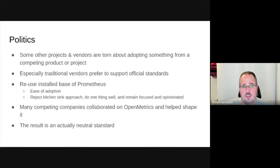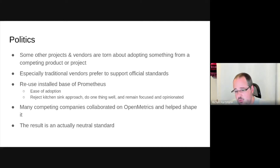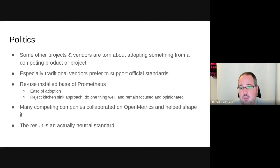There's always tons of politics in any open standard. Quite a few vendors and projects have been torn about adopting something that carries the Prometheus name — especially more traditional vendors in the networking space who want an official standard. But obviously we wanted to reuse the installed base of Prometheus, both for ease of adoption and the sheer installed base. We also wanted to reject the kitchen sink approach and follow the UNIX mantra of doing one thing well, remaining focused and opinionated based on a lot of experience in running monitoring and observability. Many different companies collaborated within OpenMetrics, so we dare say we achieved a neutral standard.